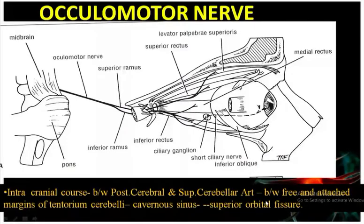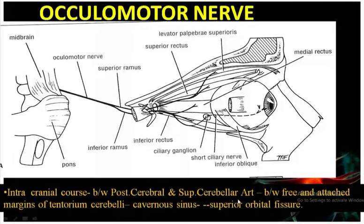You have already learned the posterior cerebral and superior cerebellar artery in the circle of Willis. Now, the oculomotor nerve will pass between the free and attached margin of the tentorium cerebelli.